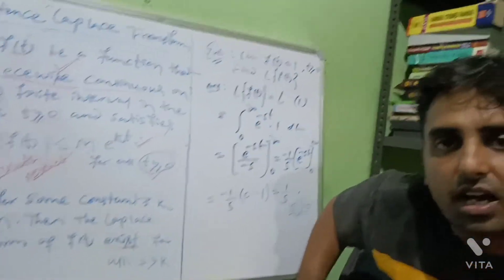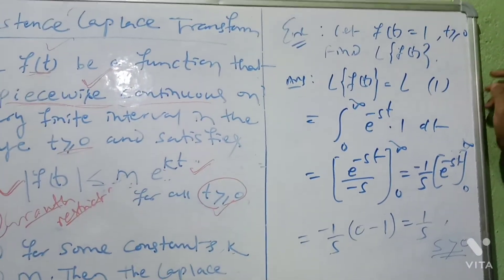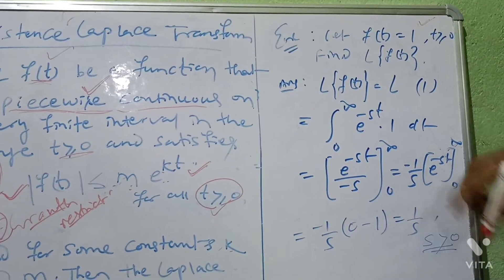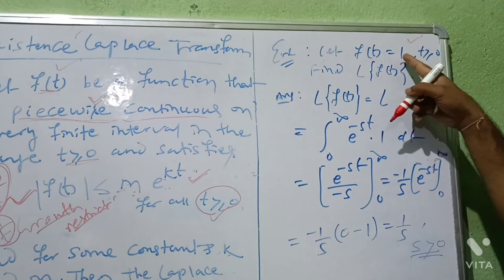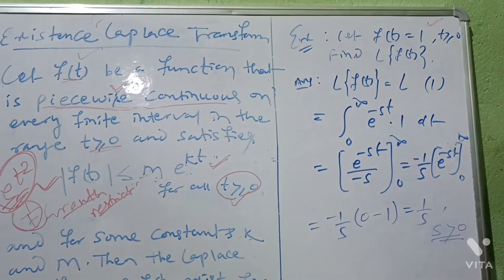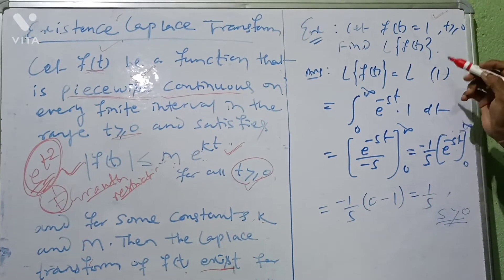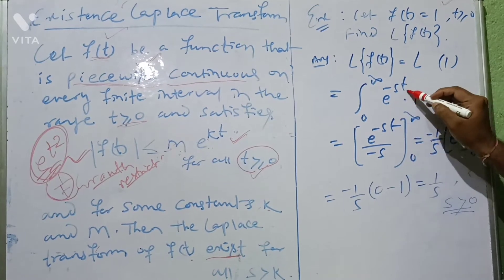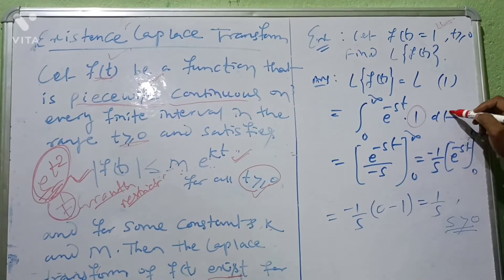Now we will go through some examples of how to calculate the Laplace transform of a function. Suppose a function f(t) = 1 for t ≥ 0. Find the Laplace of f(t). By definition: Laplace of f(t) = Laplace of 1 = integral from 0 to infinity of e^(−st) · f(t) dt. Since f(t) = 1, this becomes the integral from 0 to infinity of e^(−st) · 1 dt.